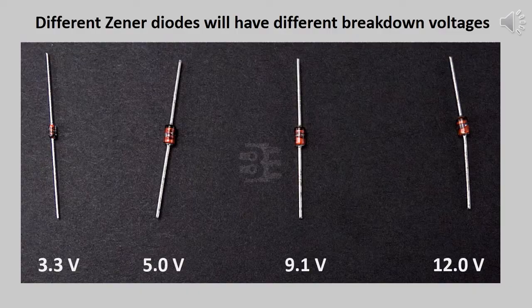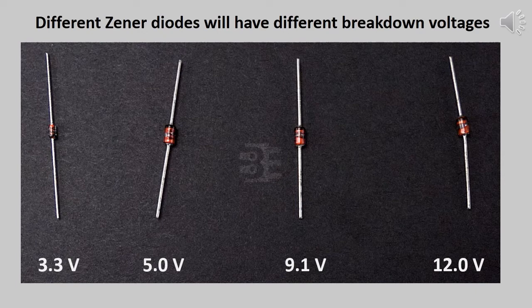Different Zener diodes are available in the market with different breakdown voltages. Some typical Zener diodes with typical breakdown voltages are shown in the picture. The first one has a breakdown voltage of 3.3 volt, the second one is 5 volt, the third one is 9.1 volt, and the fourth one is 12 volt. Depending on the doping level, the breakdown voltage also varies.